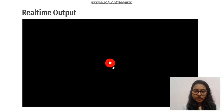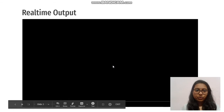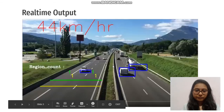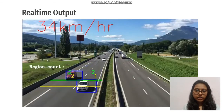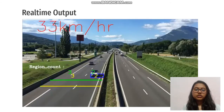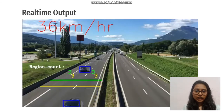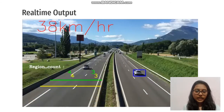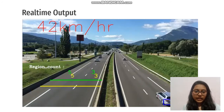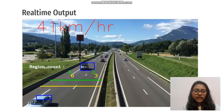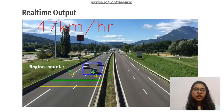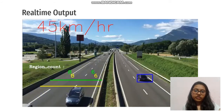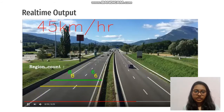Here you can see the real-time output. You can see the blue bounding box around the vehicle being detected. The green and yellow lines are points A and B. The distance between them is calculated with calibration, and the speed is calculated and displayed in the front.